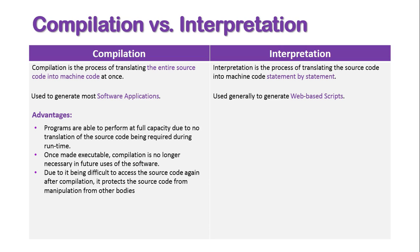Finally, due to the difficult process of accessing the source code again after compilation, it actually protects the source code — we can't have people going in and changing our program. There are obviously open source programs where this is desired, but in commercial software, we usually don't want people getting into our source code.